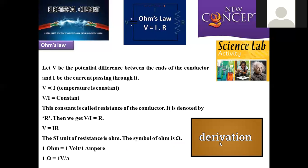The derivation: let V be the potential difference between the ends of the conductor and I be the current strength passing through the conducting material. As given by Ohm's Law, V is directly proportional to I when temperature is kept constant. Therefore V/I equals a constant. This constant is called resistance, denoted by capital R. Then V/I = R, so V = IR. V = IR is known as Ohm's Law.